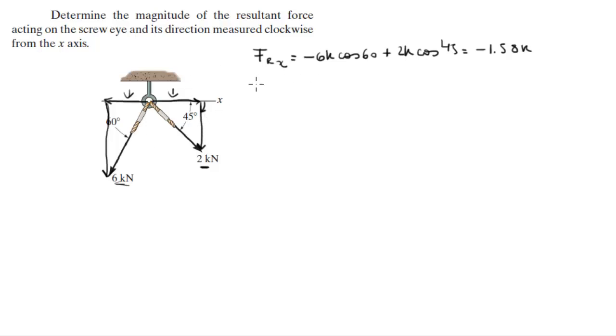The resultant force in the y direction is the addition of the y forces, this force and this force together. This force right here is negative 6k sine 60 minus 2k sine 45. Both forces are aiming down, so they're both negative. That equals negative 6.61k.